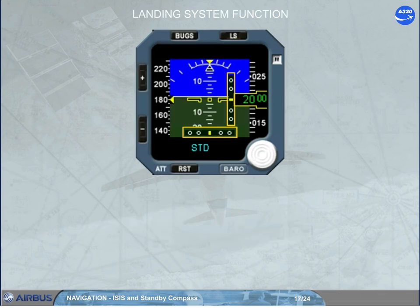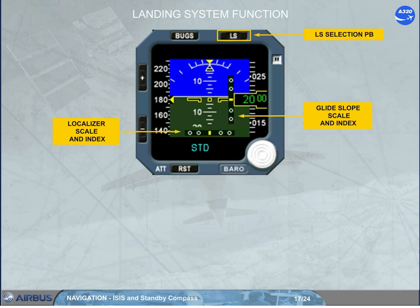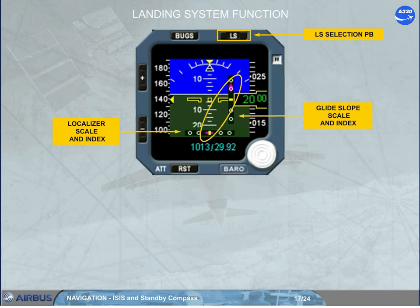The deviation scales — glide slope and localizer — appear when the LS push button is pressed. The related magenta indexes appear when glide slope and localizer signals are valid and the deviation scales are displayed. Note: for take-off using the localizer of the opposite runway, or for a back course localizer approach, do not use the LS function, because the localizer deviations are given in the wrong sense.